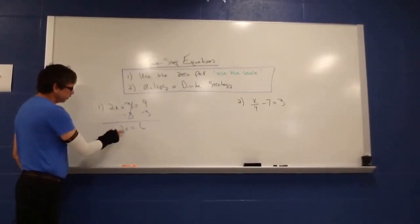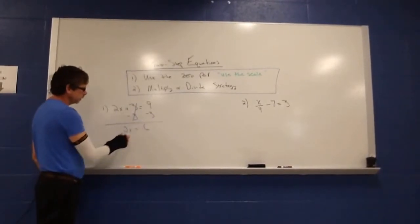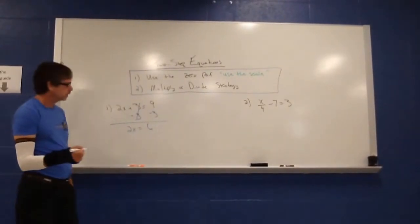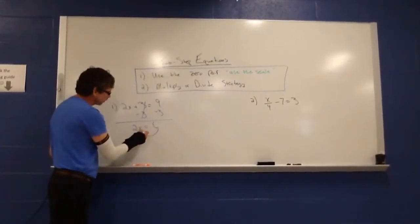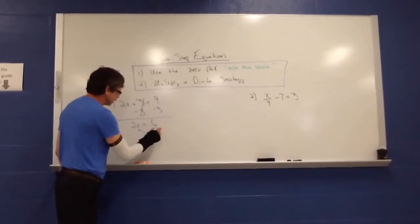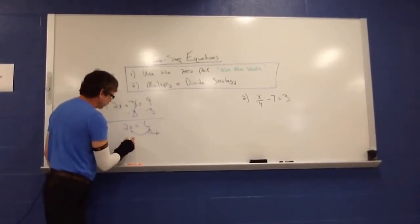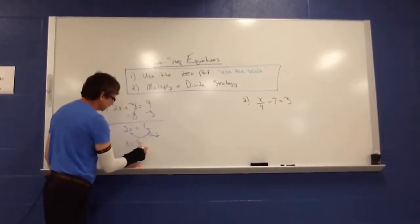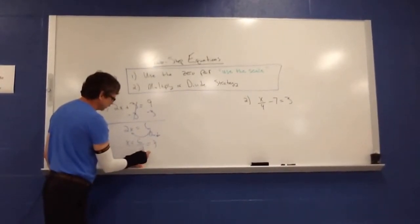We have 2x is equal to then 9 and a negative 3 would end up being a 6. Once you're to this spot, 2 times what number is 6? You may be able to see that answer. 2 times 3 is 6, then you're done with the problem. If you can't see that, what you can do is work your way backwards towards the x. And since this is multiplication, this is a signal to divide. So x is going to equal then 6 divided by 2, which would give me my 3. So my solution would be x equals 3.